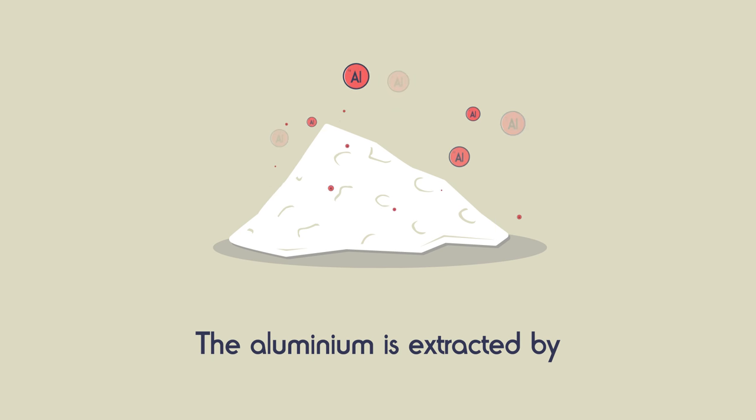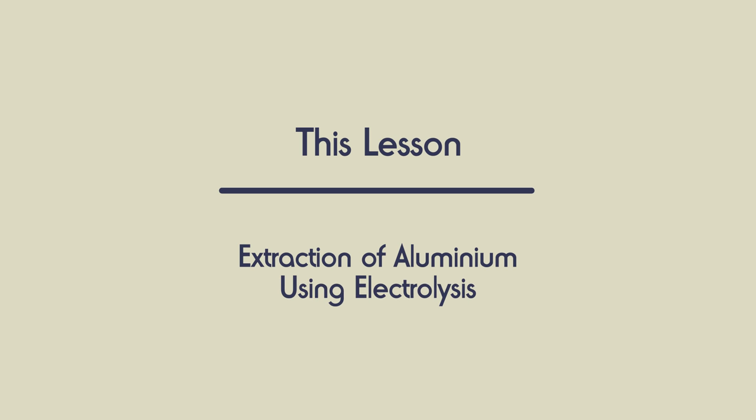The aluminium is extracted by electrolysis. In this video we are going to look at how aluminium is extracted using electrolysis.